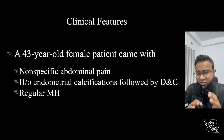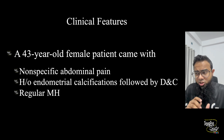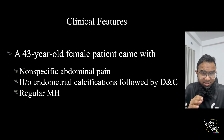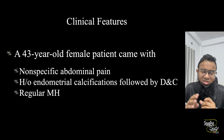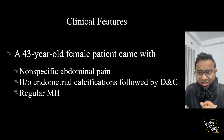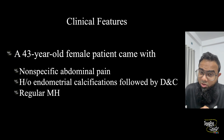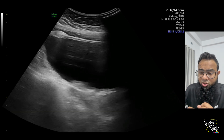She has a history of endometrial calcifications diagnosed on previous ultrasound scans, and then she went for a D&C — that is, dilatation and curettage. She reported a normal menstrual cycle with no severe dysmenorrhea or menorrhagia. Let's see what we have on ultrasound.